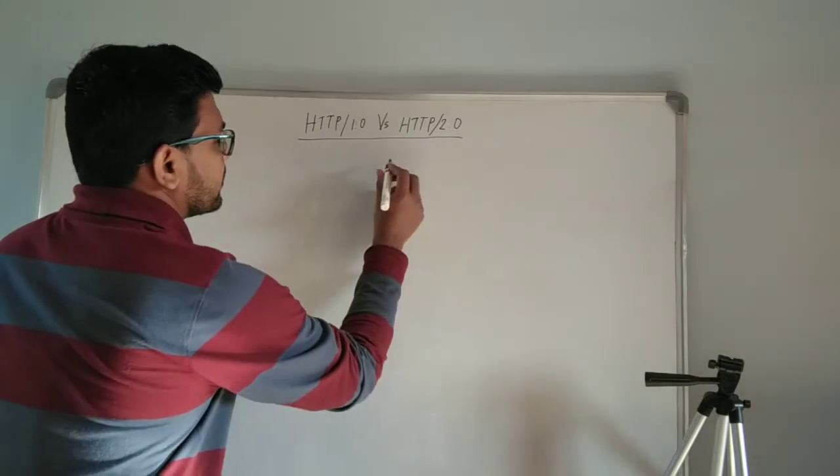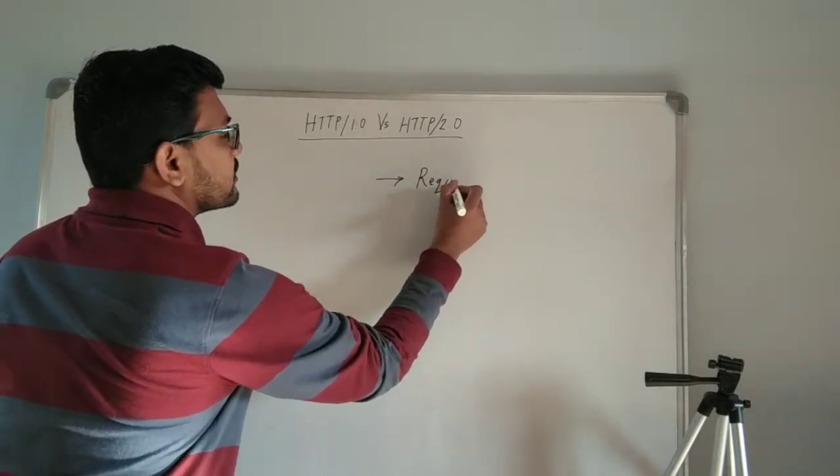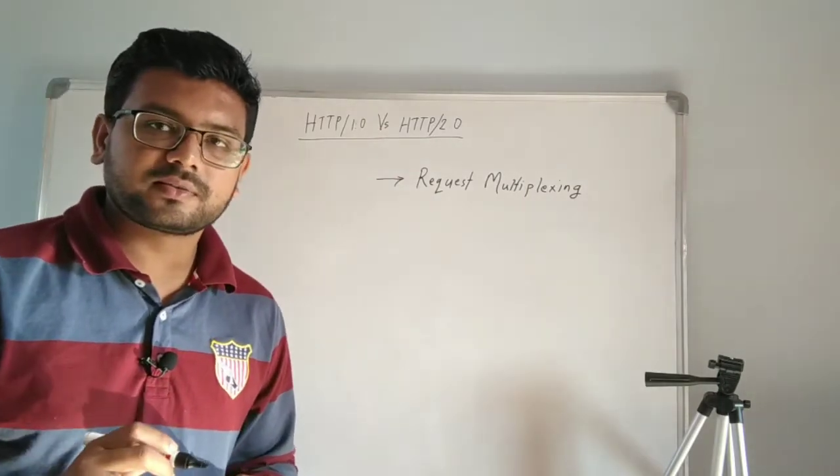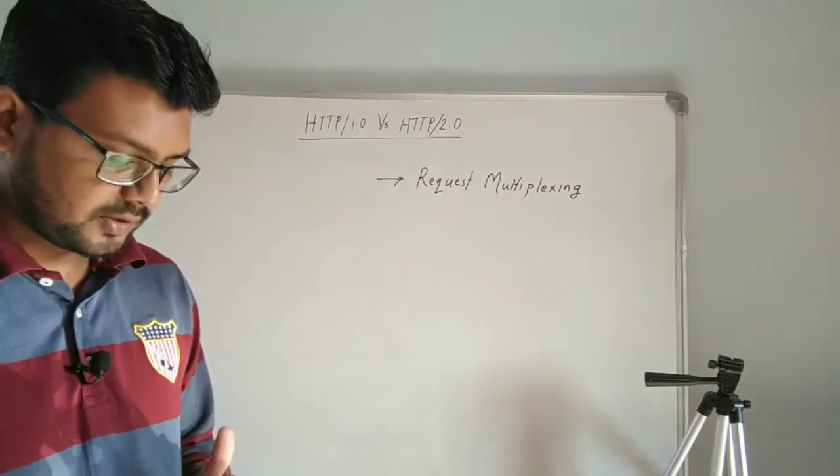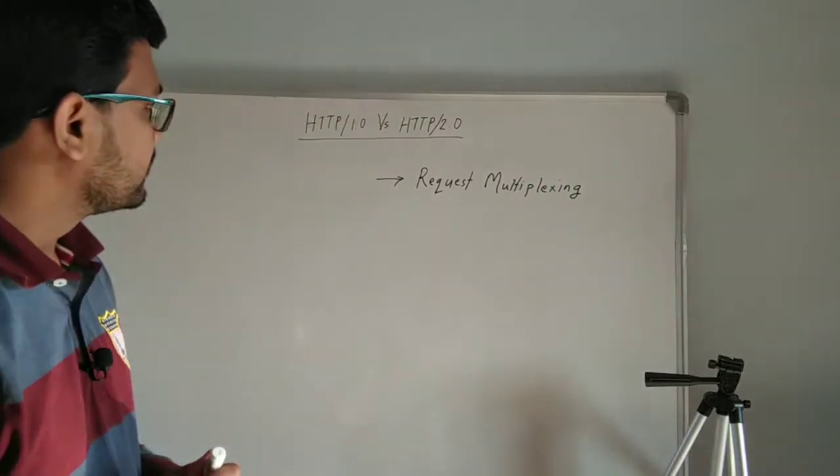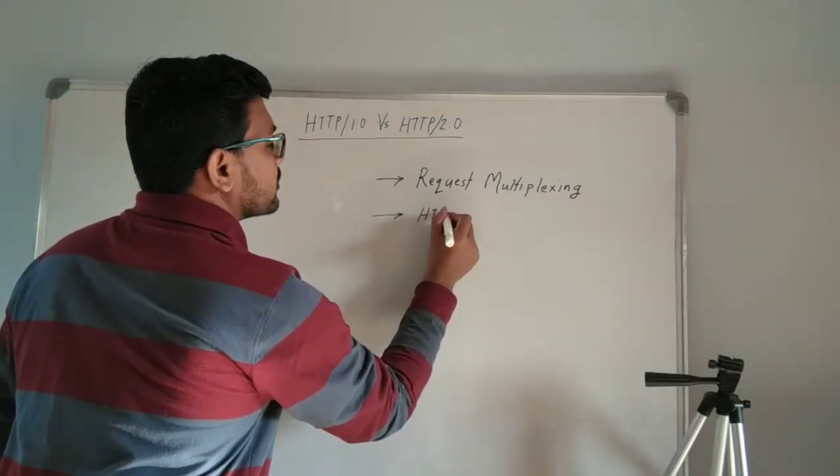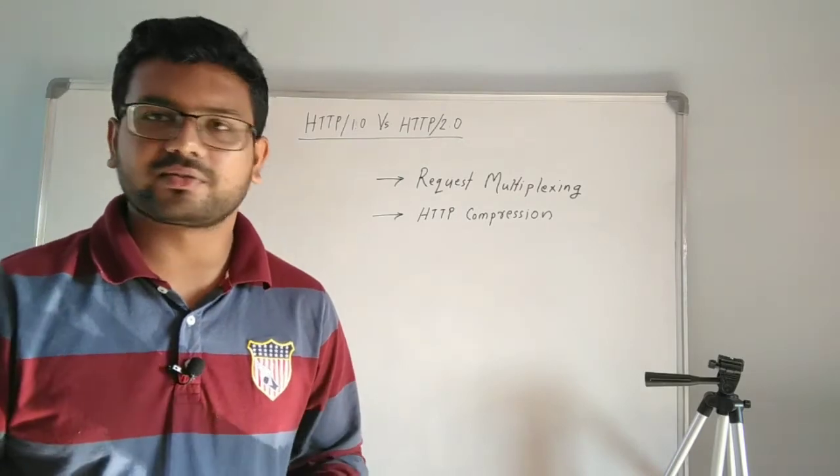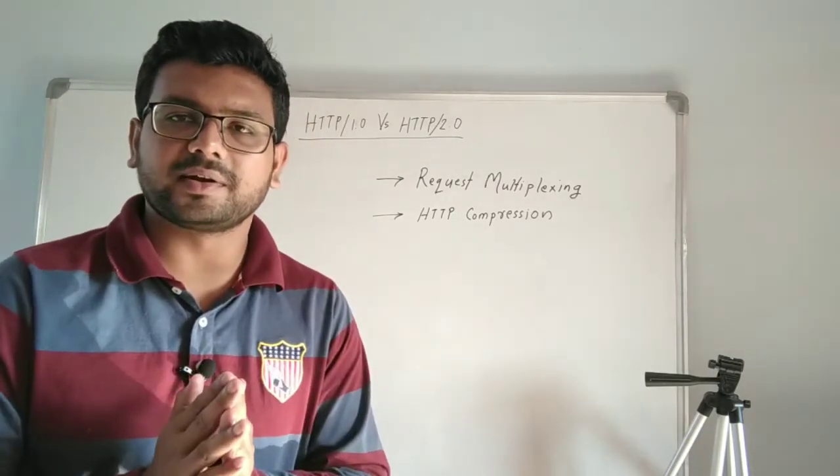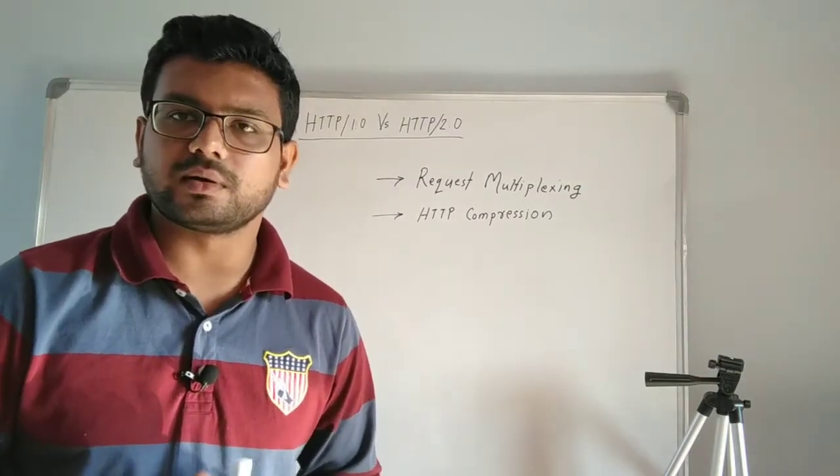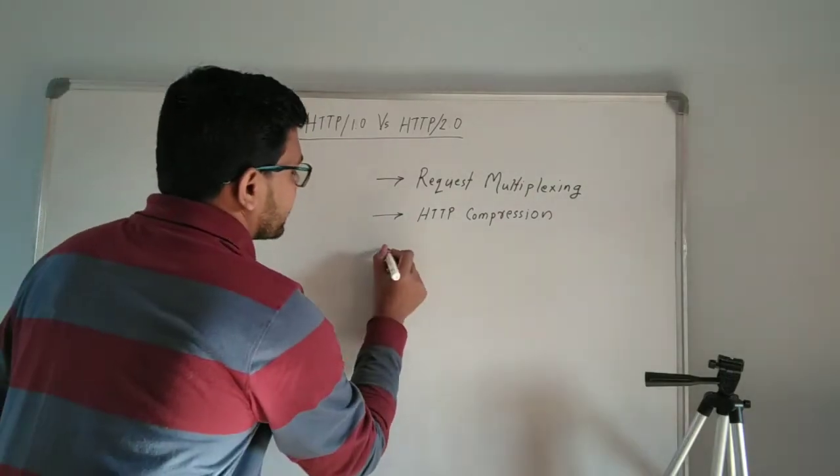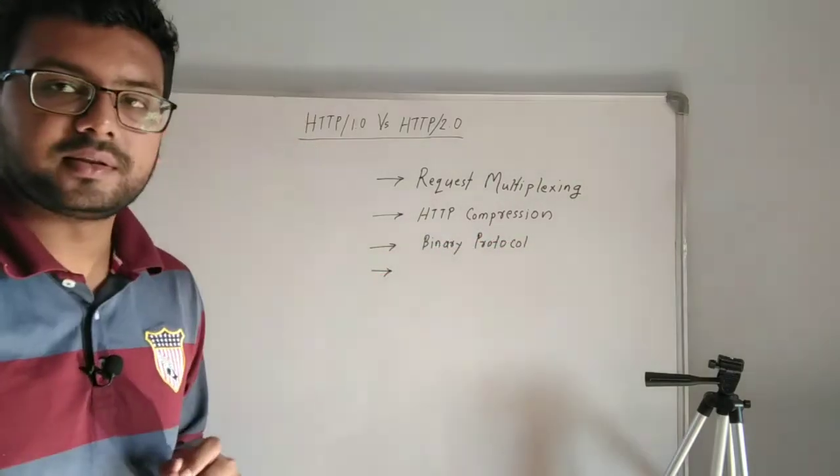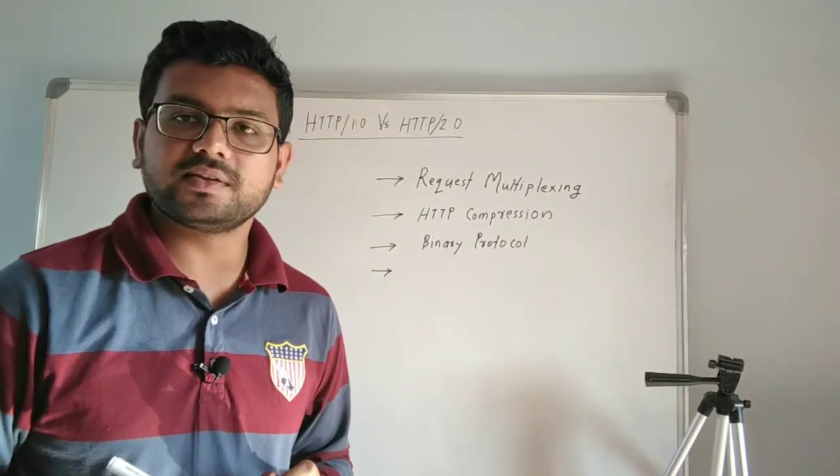First one we saw was request multiplexing. If you haven't seen this video of request multiplexing, I request you to first go to this video and watch this feature. The next one we saw is HTTP compression, or header compression, or request compression - the idea is to compress redundant headers and send them across the network. The next one we saw is binary protocol, and the final one is server push.